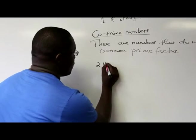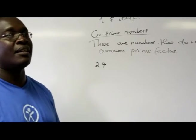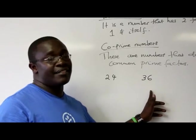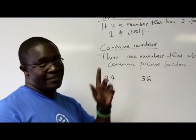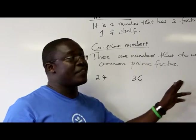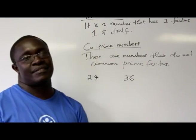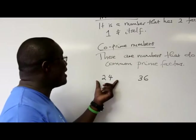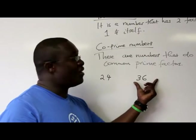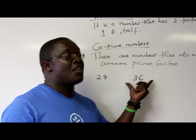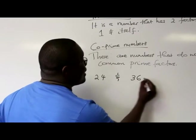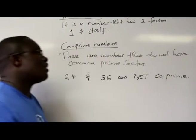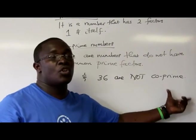So let's take, for example, 24 and 36. Someone will say: are 24 and 36 co-prime numbers? In other words, do they have common prime factors? Using the divisibility rules, we can see that 2 is a factor of 24, and also 2 is a factor of 36. Therefore, 24 and 36 are not co-prime.